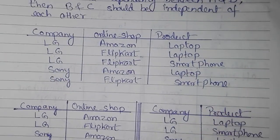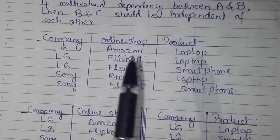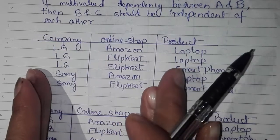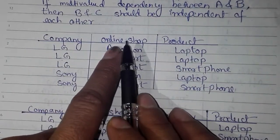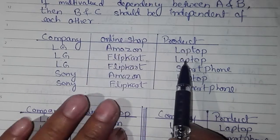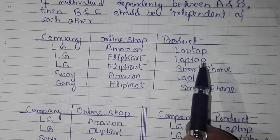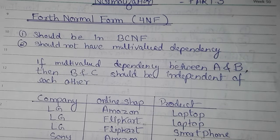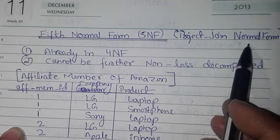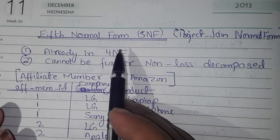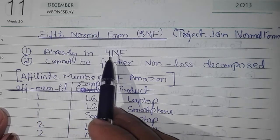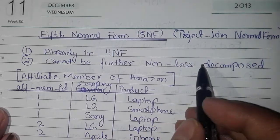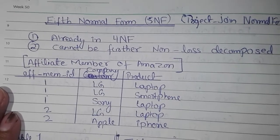So in Fourth Normal Form, there should be no multi-value dependency, and if there is a multi-value dependency between column A and B, then columns B and C should be independent of each other. Now let's move towards Fifth Normal Form. Fifth Normal Form is also called Project-Join Normal Form. It has two rules: first, the table should be in 4NF, and second, it cannot be further non-loss decomposed.